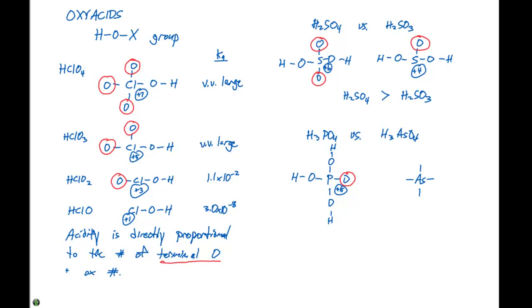For H3AsO4, we put four oxygens around here. And then we have to attach three hydrogens to these. The oxidation state here is also plus 5, and we have one terminal oxygen.